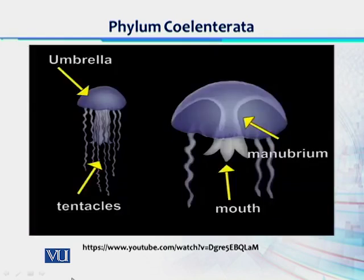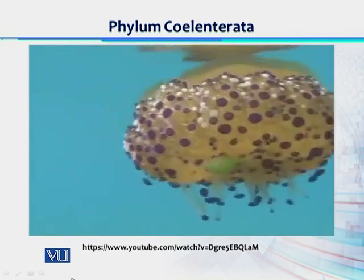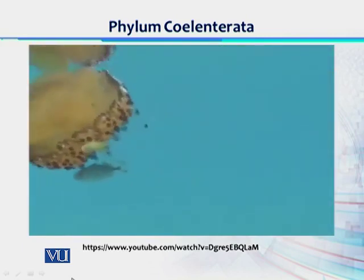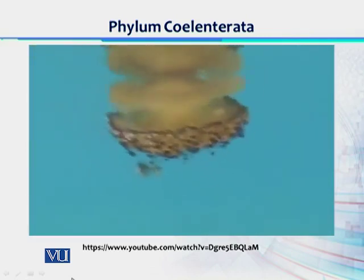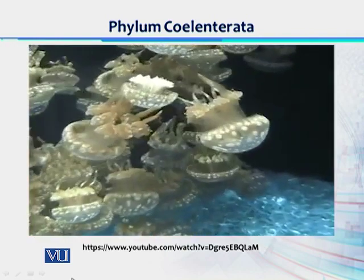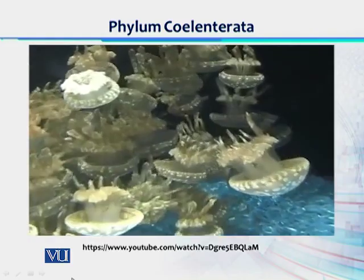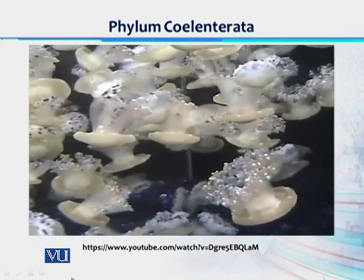The manubrium is a tubular structure hanging from the center of the umbrella, ending with an opening which acts as both mouth and anus. The jellyfish in this video belong to the phylum Cnidaria and the class Scyphozoa. The word Cnidarians originates from Greek and means nettle, referring to their ability to inflict painful stings.